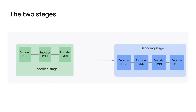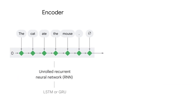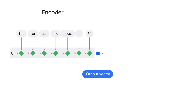as in the case of the super-powerful language models we see nowadays. A recurrent neural network encoder takes each token in the input sequence one at a time and produces a state representing this token as well as all the previously ingested tokens. Then this state is used in the next encoding step as input along with the next token to produce the next state. Once you are done ingesting all the input tokens into the RNN, you output a vector that essentially represents the full input sentence. That's it for the encoder.